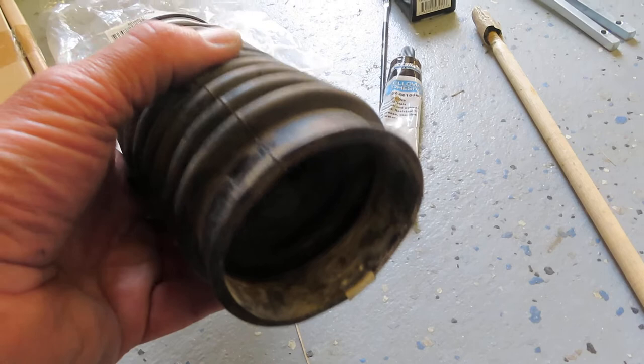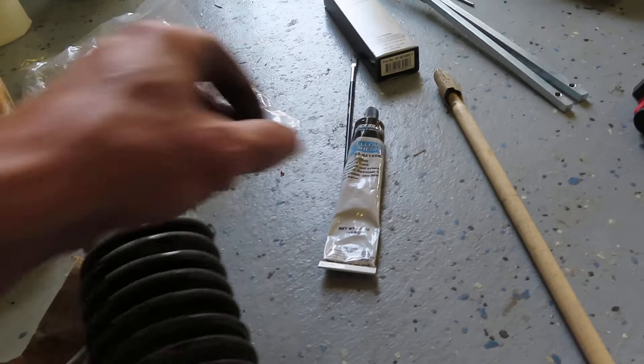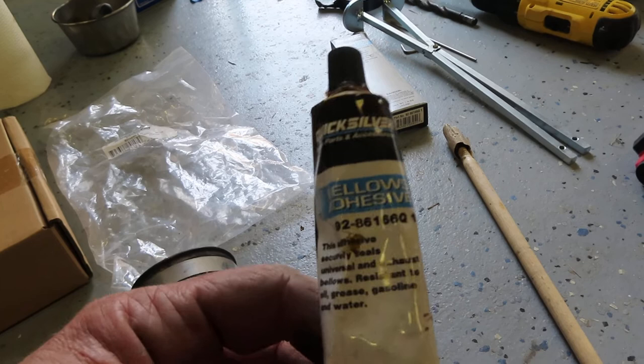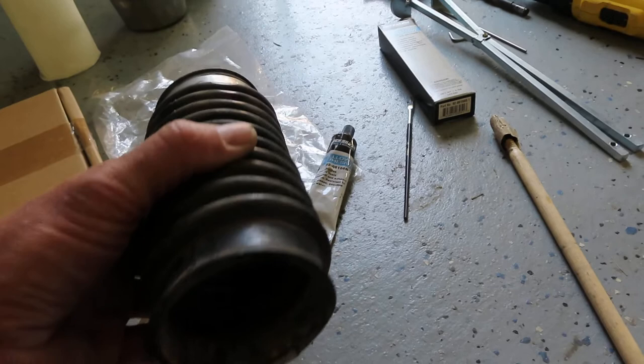So you brush it on there really thin, both surfaces. This stuff dries right now. You have no time. Zero time. Maybe they make a better product that gives you some time. So you're not going to be able to shove your bellows on there and tighten the clamps up. It's going to stick and you won't be able to get it all the way on there.